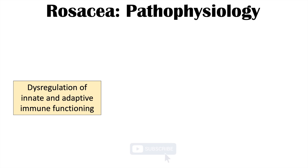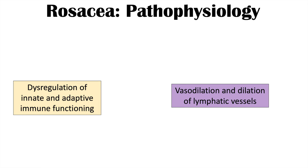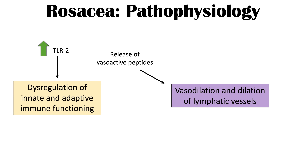The pathophysiology of rosacea involves dysregulation of innate and adaptive immune functioning, as well as vasodilation and dilation of lymphatic vessels. The immune dysregulation includes increased expression or overexpression of toll-like receptor 2 (TLR2), a cell receptor involved in innate and adaptive immune functioning. With regards to vasodilation, there seems to be an increased release of vasoactive peptides noted in patients with rosacea.